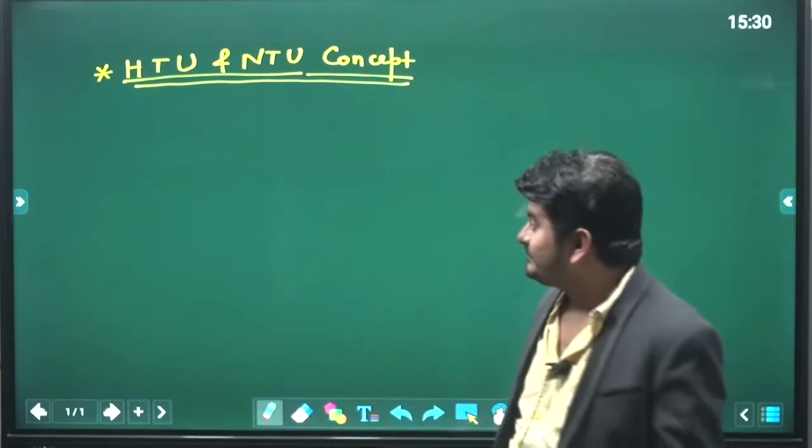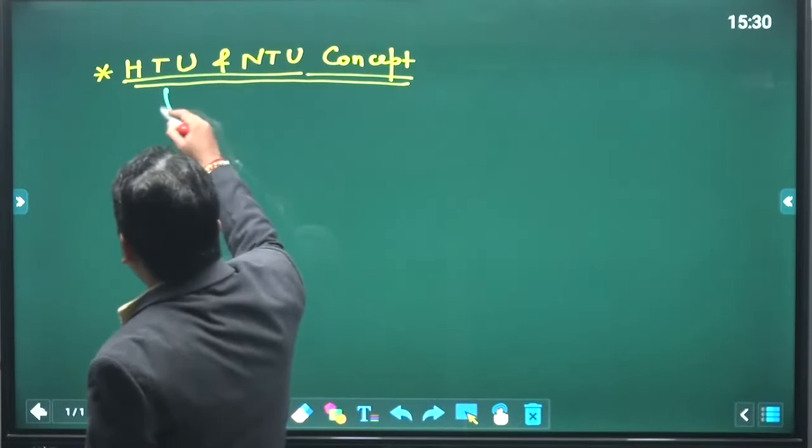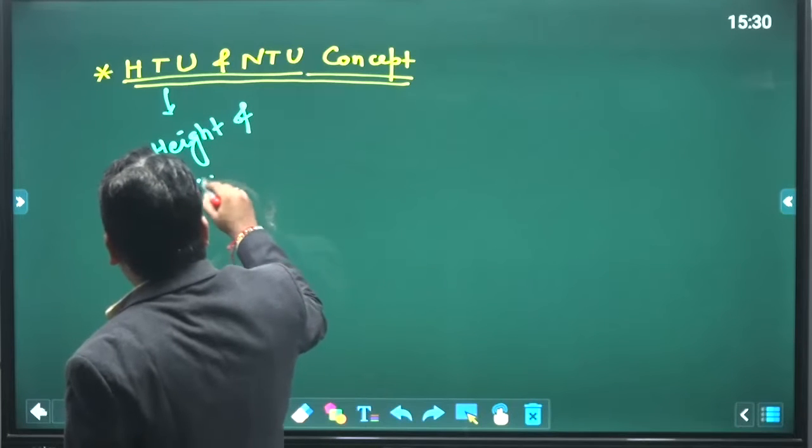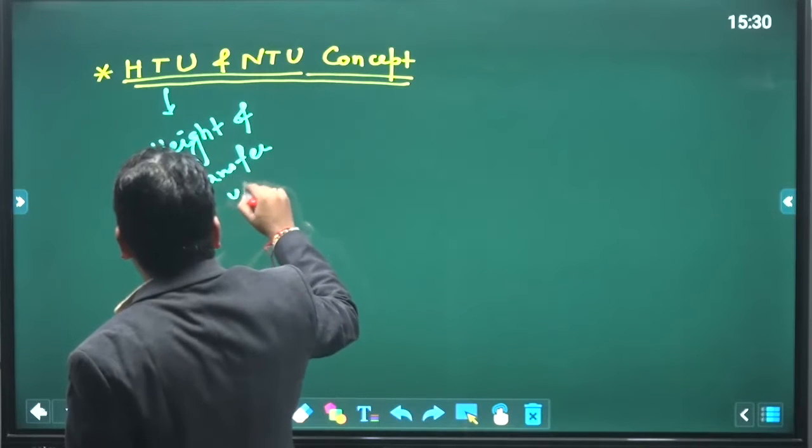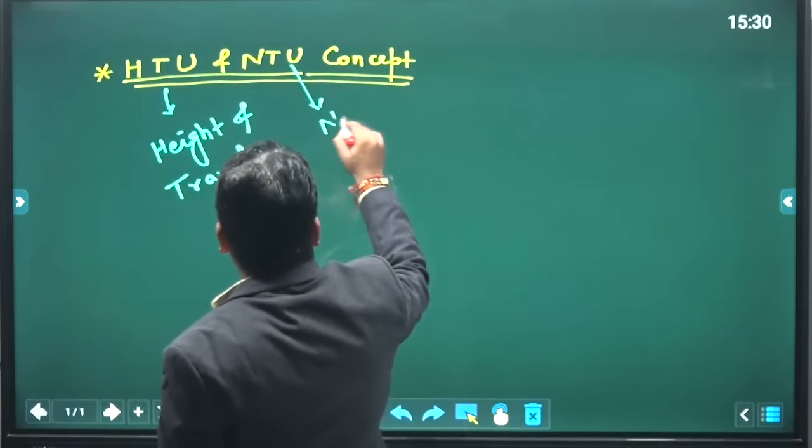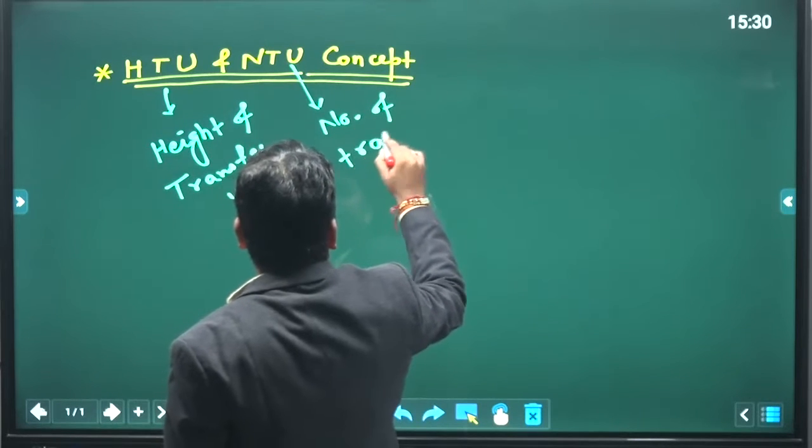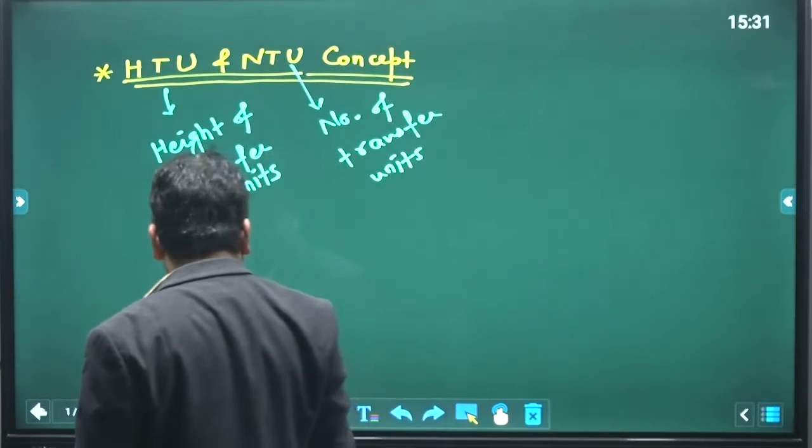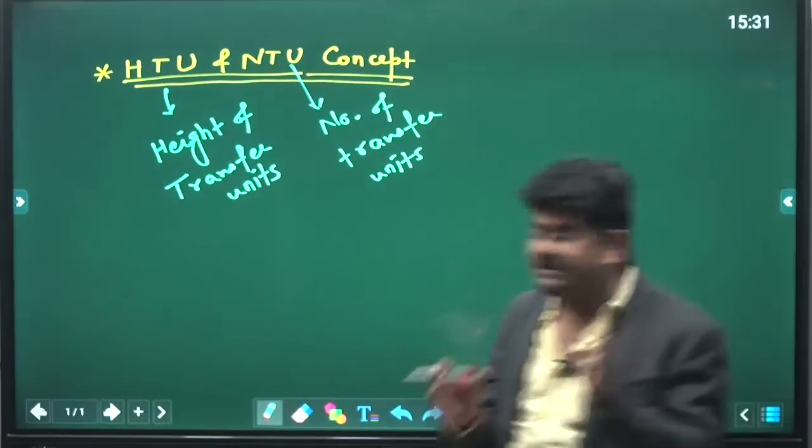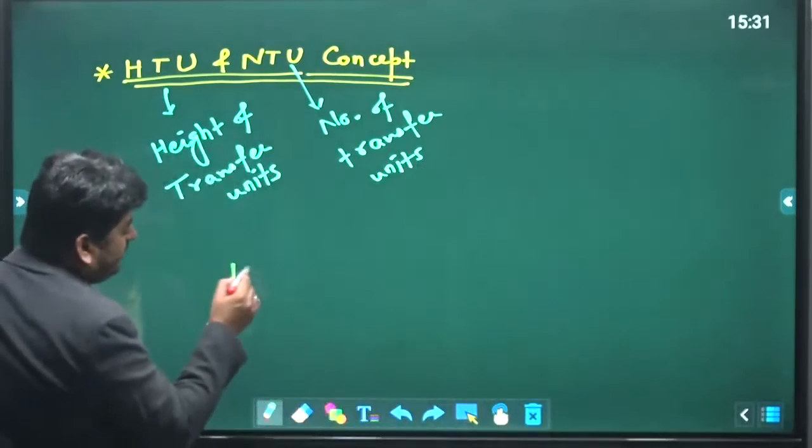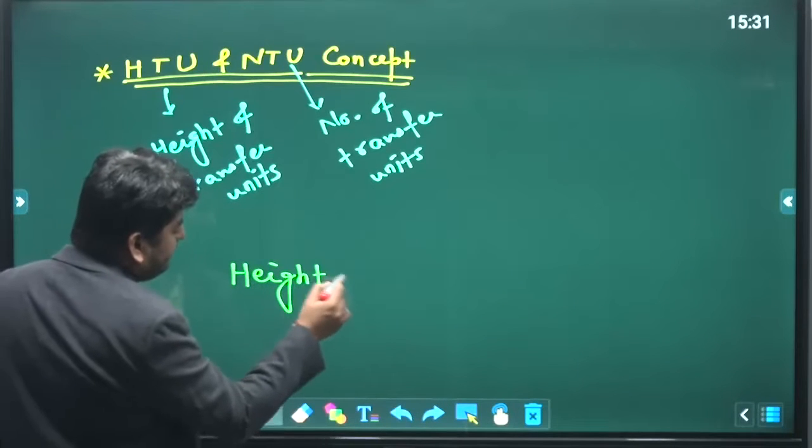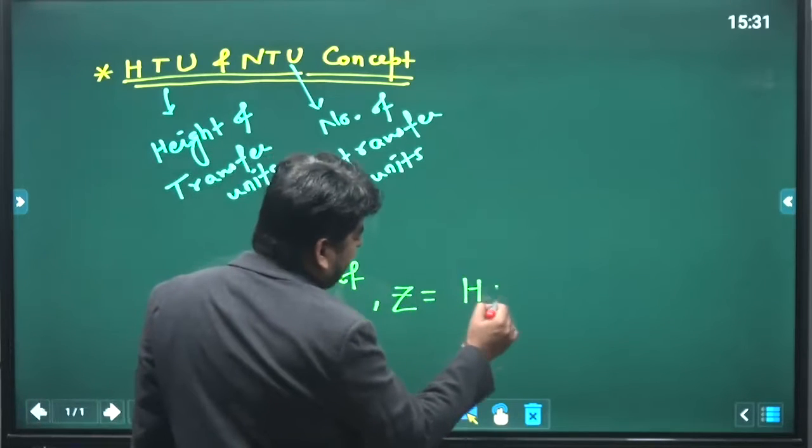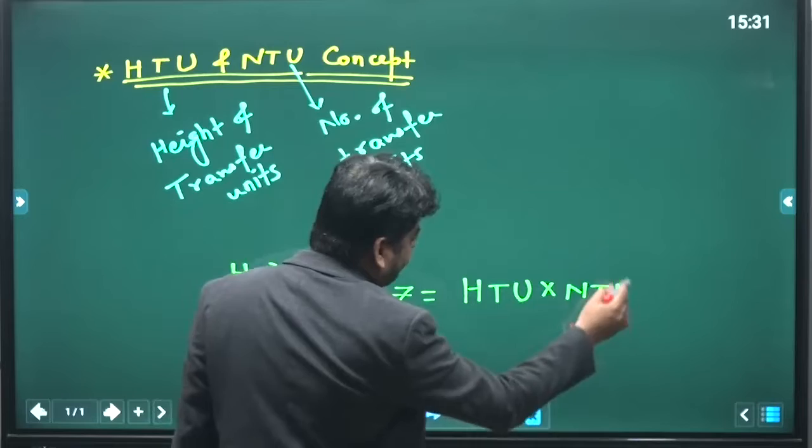So HTU and NTU concept - what is HTU? HTU is your height of transfer unit and NTU is the number of transfer units. Now how can you relate these things? As we have discussed already, the height of packing is equal to the product of HTU and NTU.